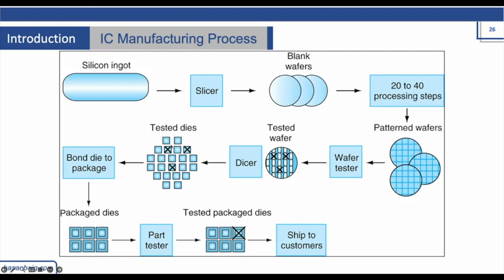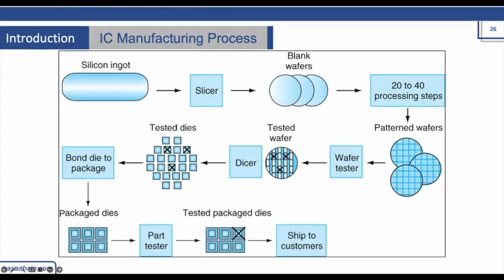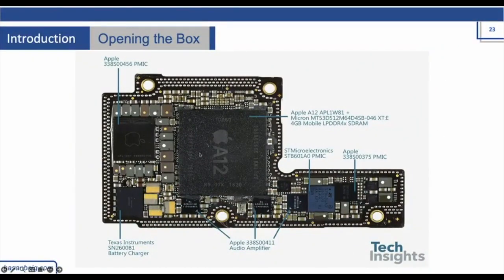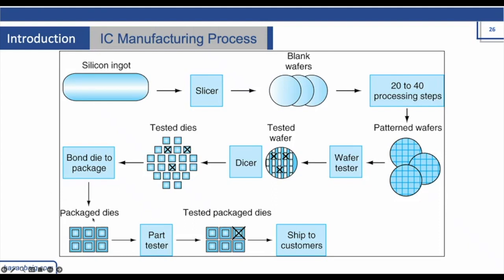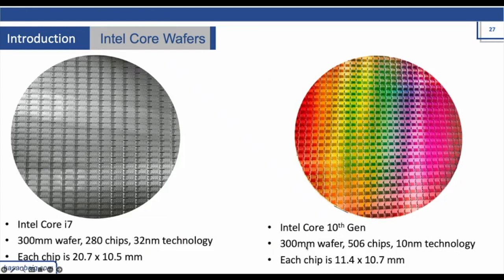Once these dies are ready, they are put into the package, which you normally see black in color. So this is the package where that die is placed inside it. Once packed into that black packaging, it is again passed through a testing phase called the power tester. The parts that are not working are excluded — they are simply wasted; there is no way to fix it. If some chip is not working, you cannot open the packaging and fix it — it is just thrown away. Once verified, it is shipped to customers. These are two examples: the Intel Core i7 and Intel Core 10th generation processor.